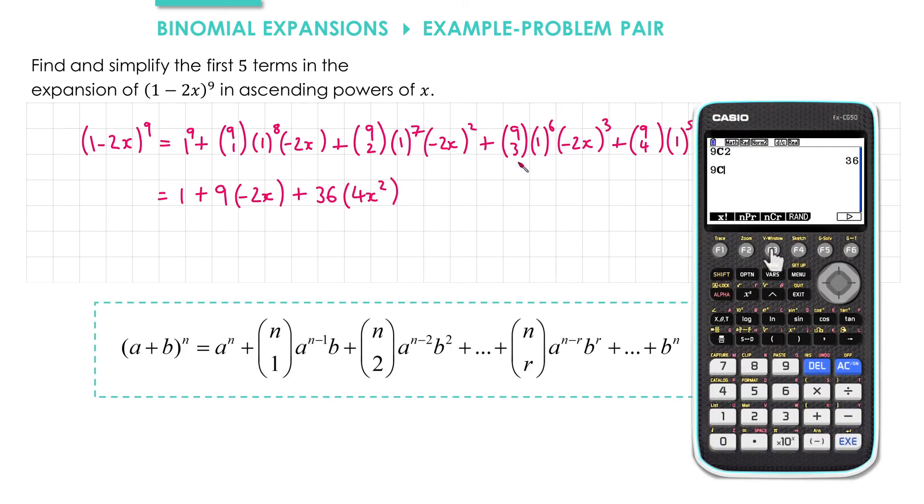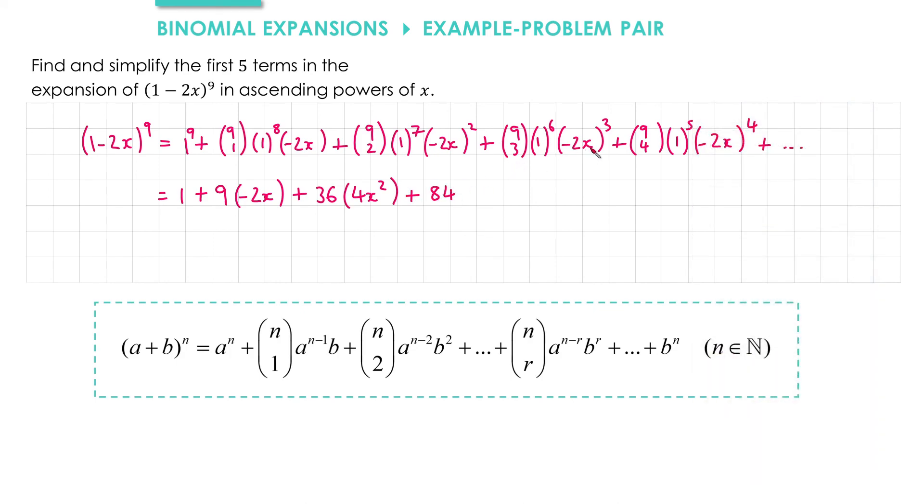9 choose 3, we'll pop that into our calculator. We get 84. And negative 2x all cubed gives us negative 8x cubed.